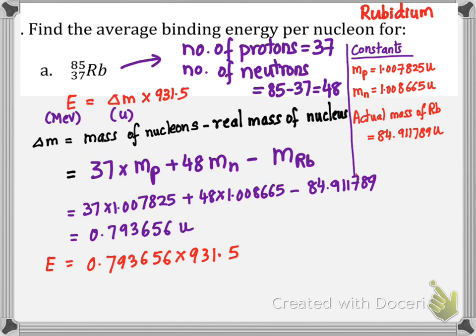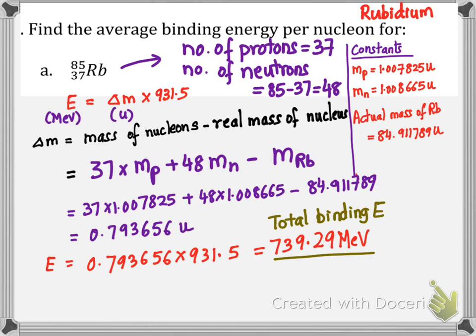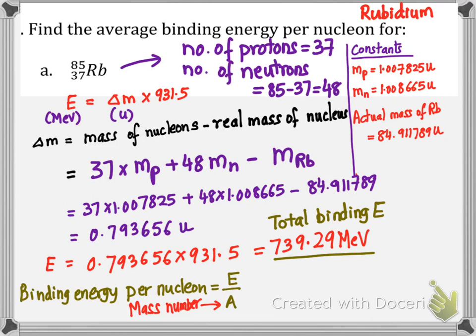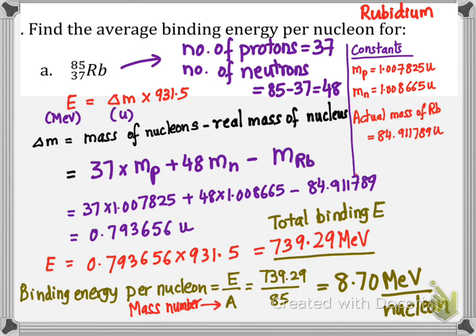To convert this to binding energy, multiply 0.793656 by 931.5 to get the answer in mega electron volts. However, this gives the total binding energy, but the question asks for average binding energy per nucleon. So we divide the total binding energy by the mass number (85, the total number of nucleons), giving 739 divided by 85.